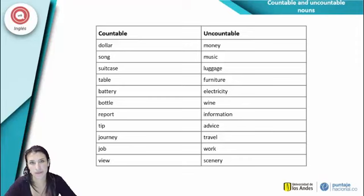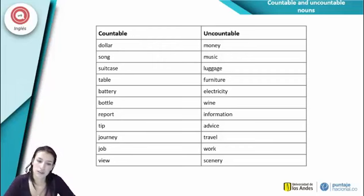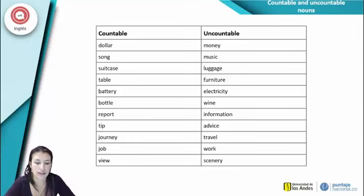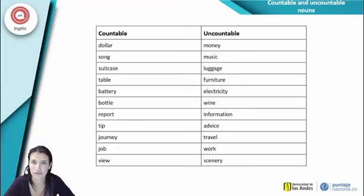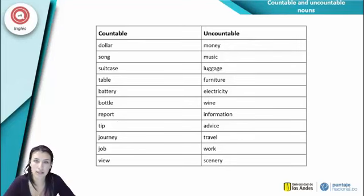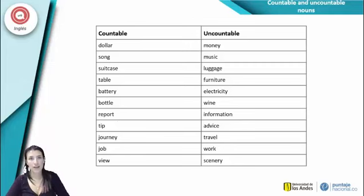Hay una lista importante de palabras contables e incontables. Contables: a dollar, a suitcase, a table, a battery, a bottle, a report, a tip, a journey, a job, a bill. Incontables — no podemos decir: a furniture, a wine, a travel, a advice, an information, an advice. Para decir 'advice' (consejo), no decimos 'an advice' sino 'a piece of advice' — es la manera correcta porque son incontables.